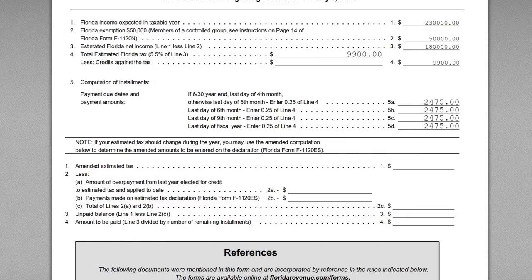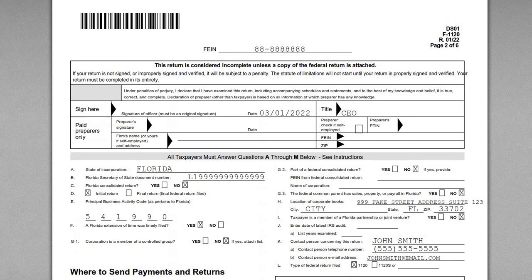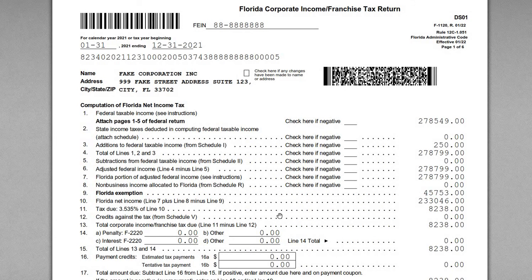That covers it for this video. This is a very simple Florida corporate return without too many complex moving parts, but the key takeaway is: if you are a C corporation set up in Florida or doing business in Florida, you may need to file this form. File the return, claim the exemption — many times you won't owe any tax — but if you do owe, make sure you're fully compliant. Thank you so much for watching and I look forward to seeing you in the next video.